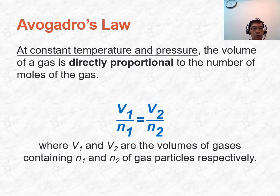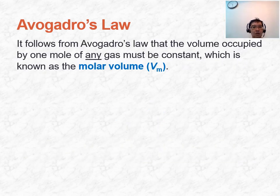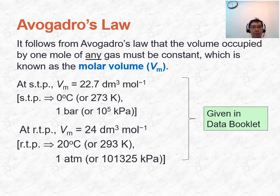We will now take a look at Avogadro's Law. It involves maintaining the same temperature and pressure, with the volume of gas directly proportional to the number of moles: V₁/N₁ = V₂/N₂. From this, one mole of any gas occupies the same volume, known as the molar volume. From the data booklet: 22.7 dm³ at STP and 24 dm³ at RTP.